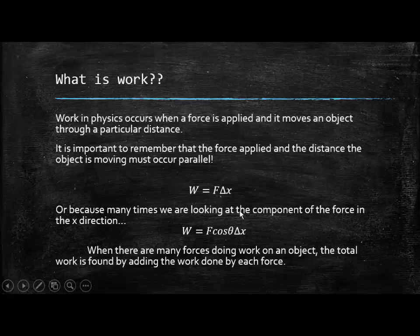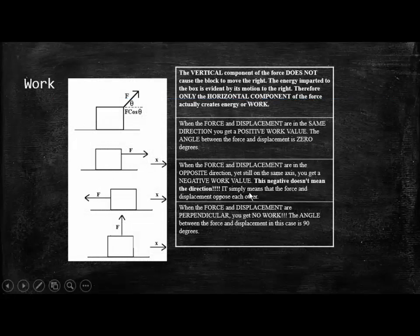Because a lot of times we're looking at the component of the force in the x direction, you'll often times see your work equation written like W = F cosine theta times the displacement. Because remember, all we want is that part of the force that's actually going in the same direction as the object is going. So whenever you have a situation where you have lots of forces acting on an object, the total work is found whenever you add the work that's done by each force. Let's take a look at a little graphic that kind of explains this maybe a little bit clearer.